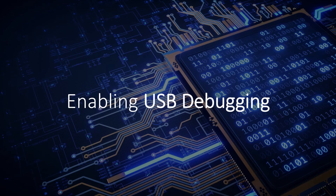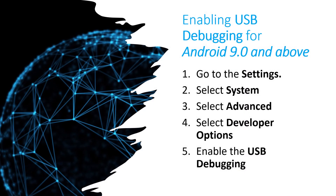After enabling the developer mode, we are now ready to enable the USB debugging and allow our mobile device to debug through USB. For Android 9.0 and above, first we need to go to Settings, select System, select Advanced, select Developer Options, and enable the USB debugging.